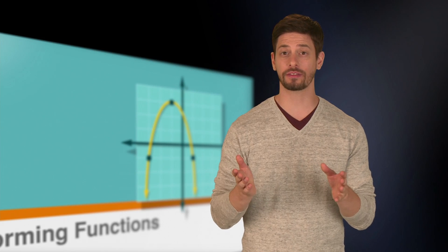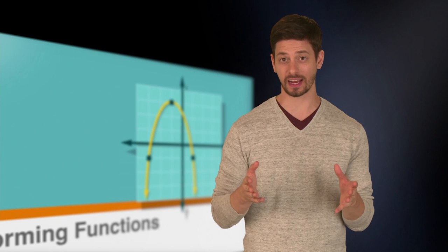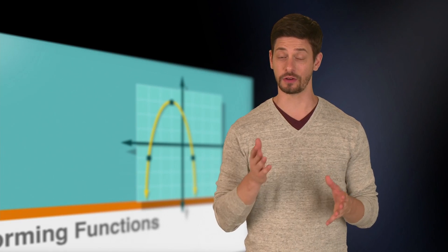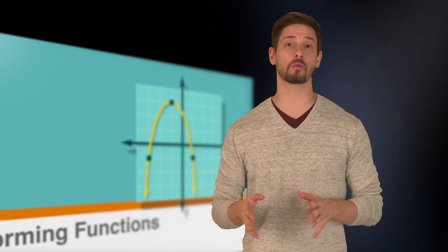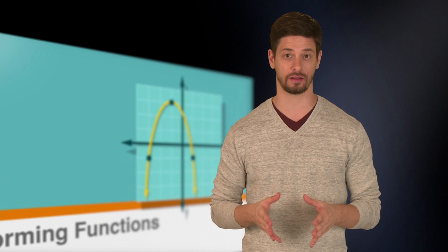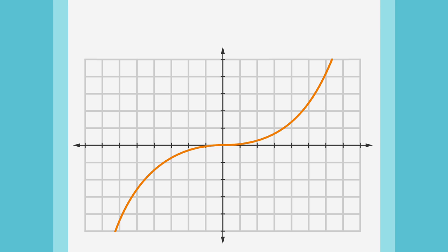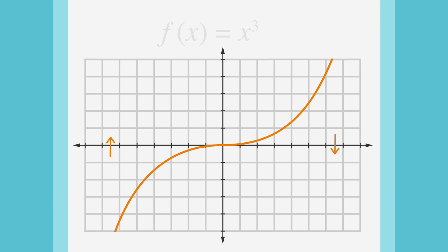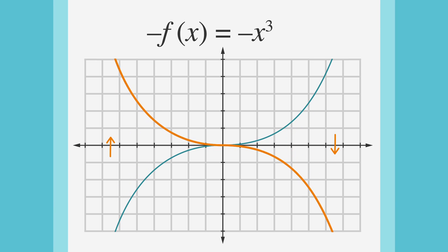And what about reflecting the function over the x axis? To do that, we'll just multiply every y value by negative 1. In the example, f of x equals x cubed, we can algebraically reflect the function over the x axis by multiplying the entire function by negative 1 to get the new function, negative x cubed. This makes every y value negative and reflects the function over the x axis.